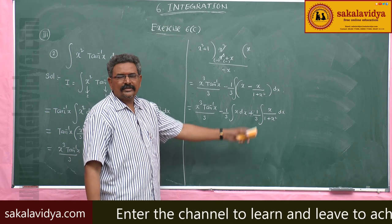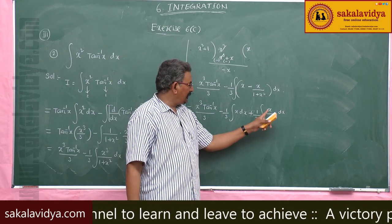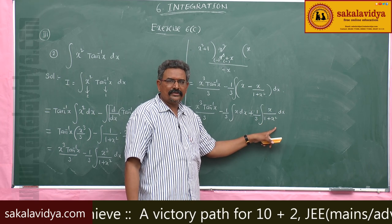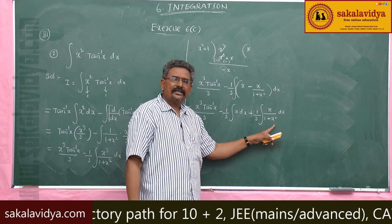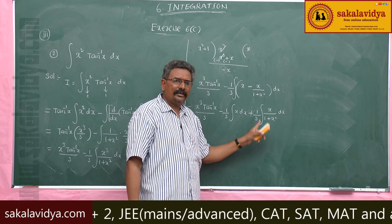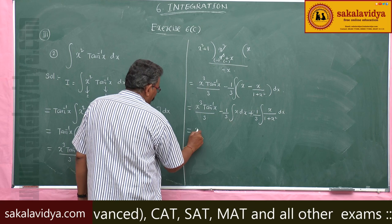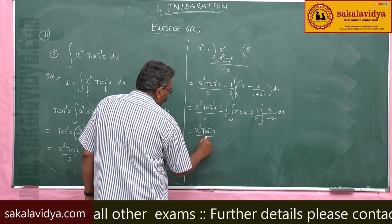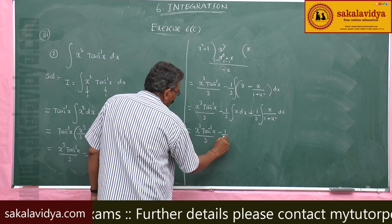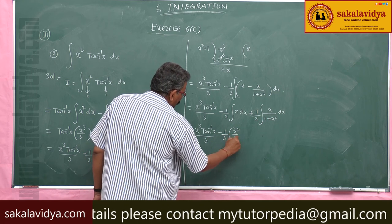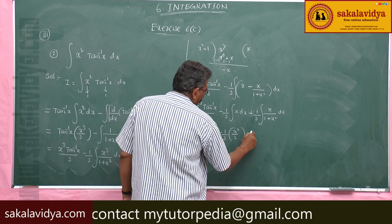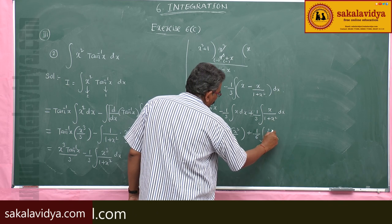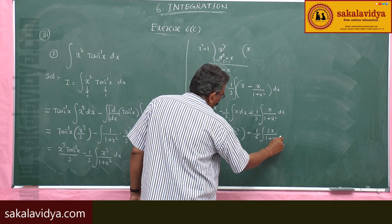The integral of x dx we can find out easily. For the integral of x by 1 plus x squared, note that x is part of the derivative of 1 plus x squared, since the derivative of 1 plus x squared is 2x. So multiply by 2 and divide by 2. This gives x cubed tan inverse x by 3, minus 1 by 3 times x squared by 2, plus 1 by 6 times integral of 2x by 1 plus x squared dx.